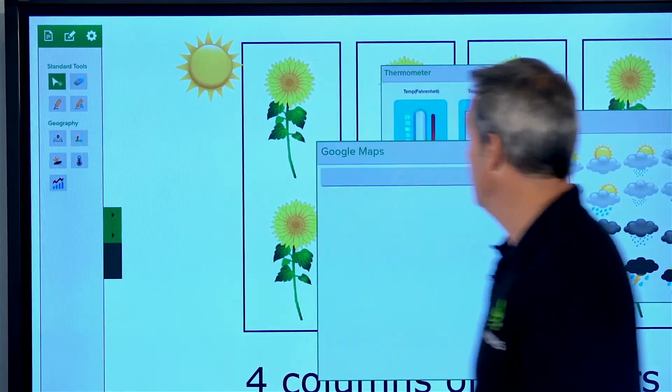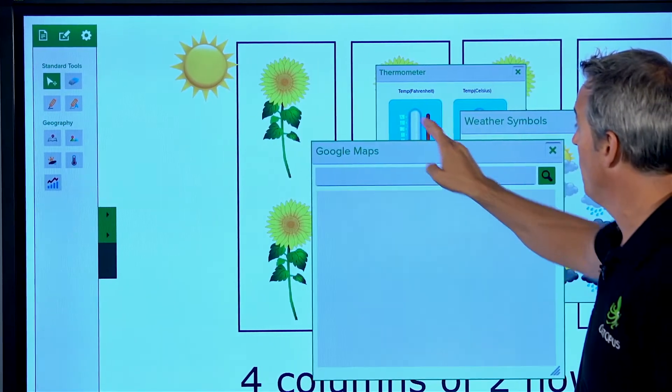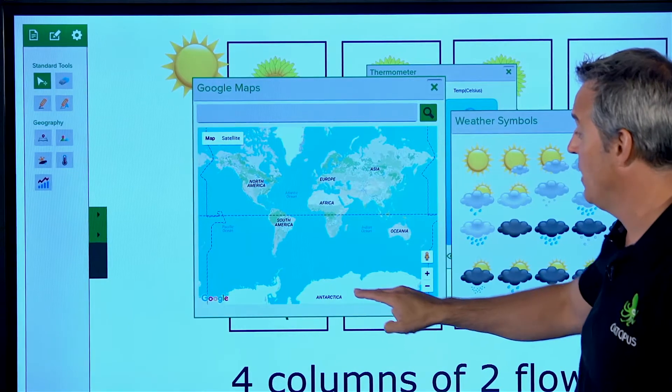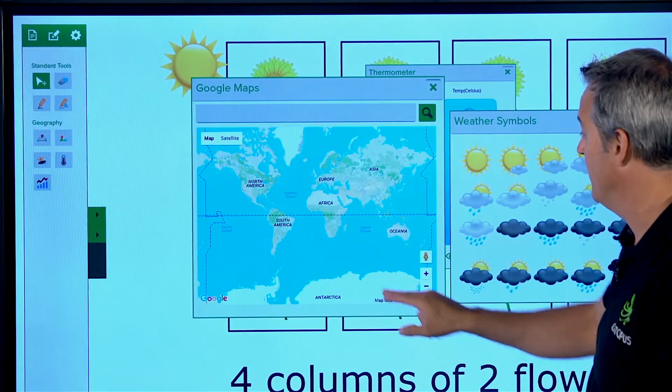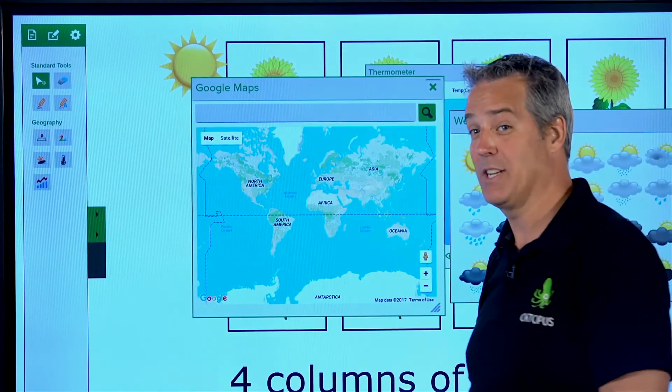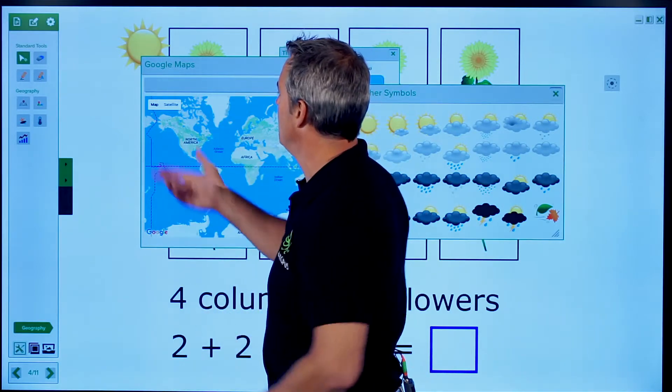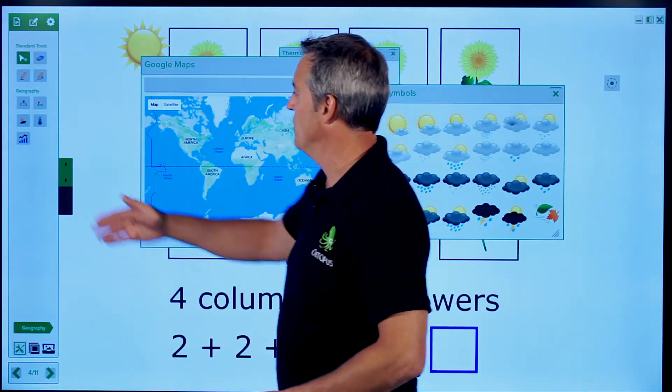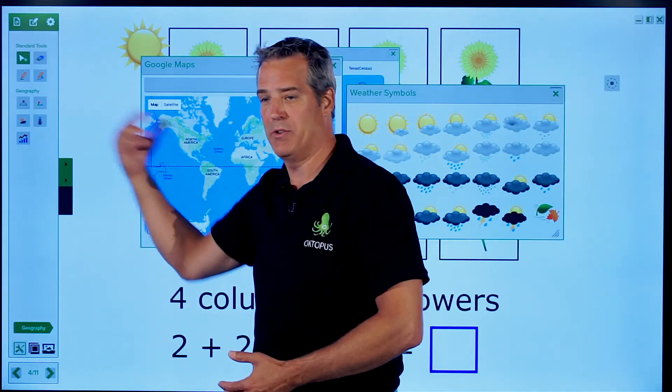And we could bring out our mapping tools as well. There might be certain areas of the world. Can you identify someplace here where these flowers would not grow? And I'm going to guess that probably not down in Antarctica. So we can bring out our map tools, Google Maps, our select map tools. We can build charts, weather tools, and whatnot.